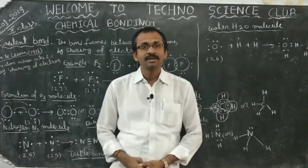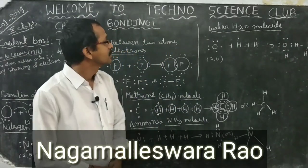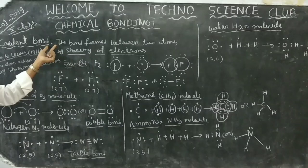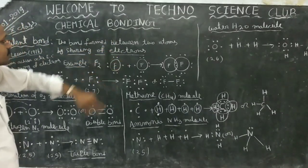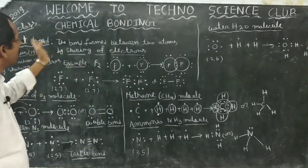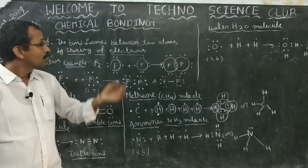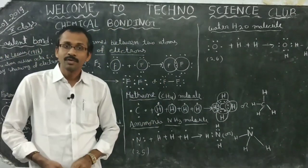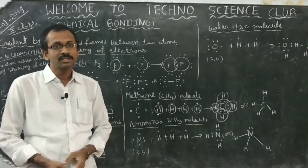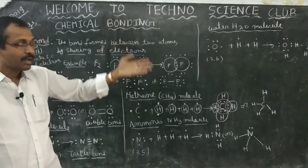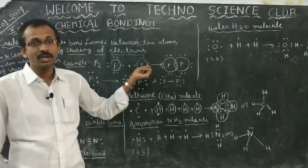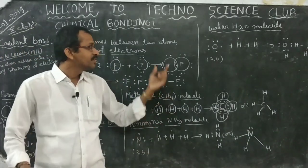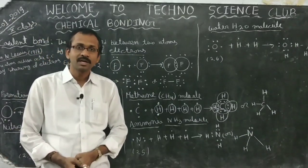Welcome to Tecno Science Club. Today's topic is important and interesting. In the 10th class lesson on Chemical Bonding, we'll look at covalent compounds — what is meant by a covalent compound, how the covalent bond is formed, and examples for the covalent bond. Some previous videos on chemical bonding are available; links are in the description and in cards. Please watch those videos and see this video until the end.